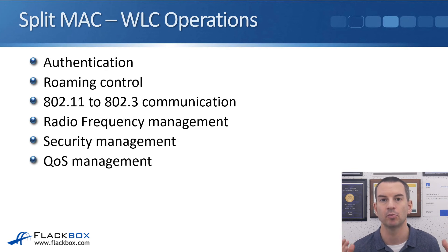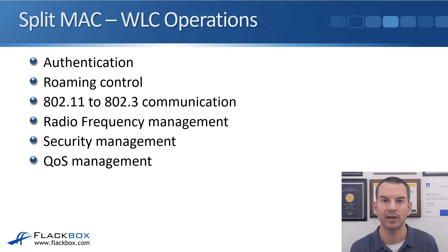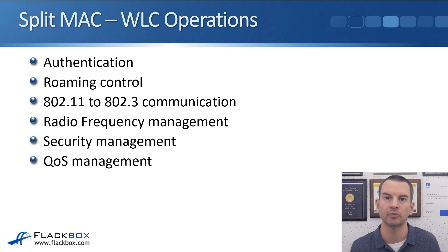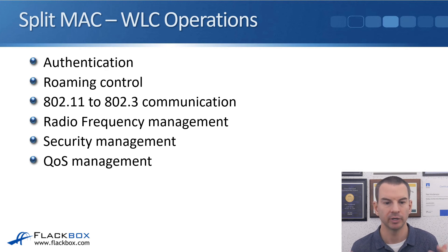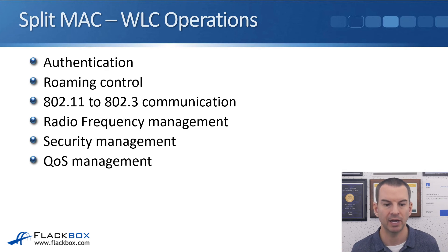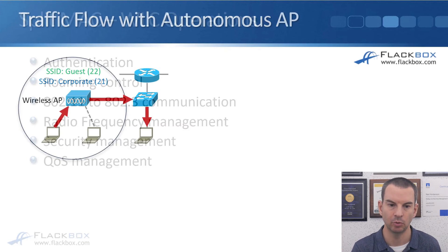The operations handled by the wireless LAN controller include: authentication — when you enter your password or username and password to join the wireless network; roaming control; 802.11 to 802.3 communication, meaning all traffic passing from wireless to the wired LAN goes through the WLC; radio frequency management — ensuring neighbouring APs aren't on the same channel; and security and QoS management.